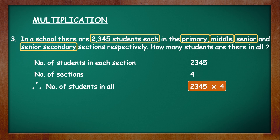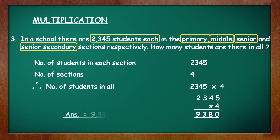Write that multiplication statement and multiply below. 2345 into 4 is equal to 9380. The answer is equal to 9380 and the unit is students.